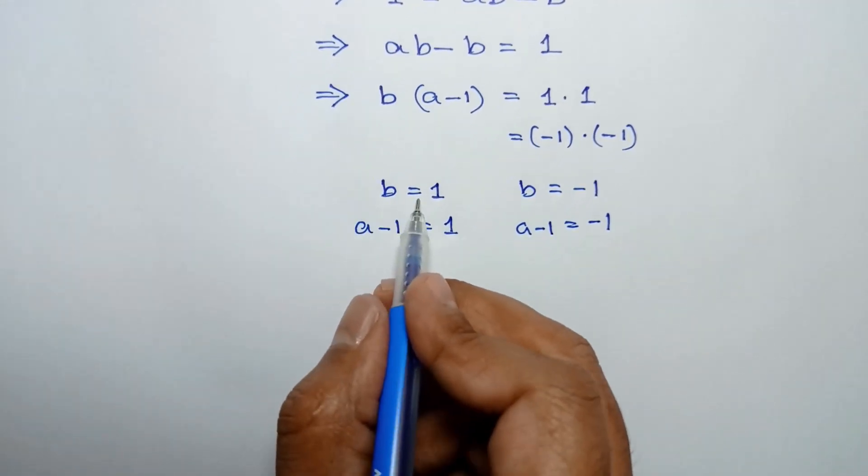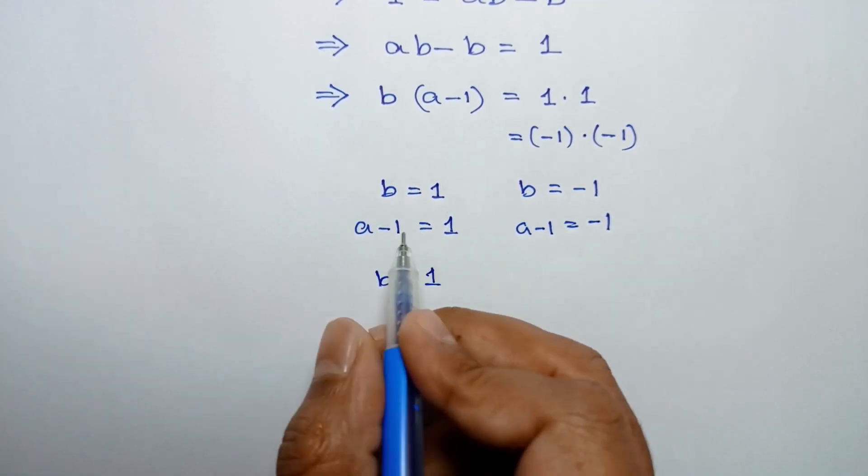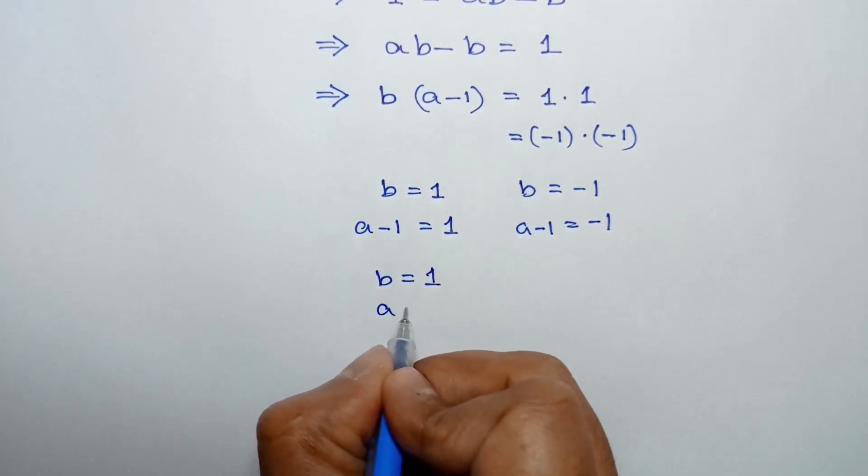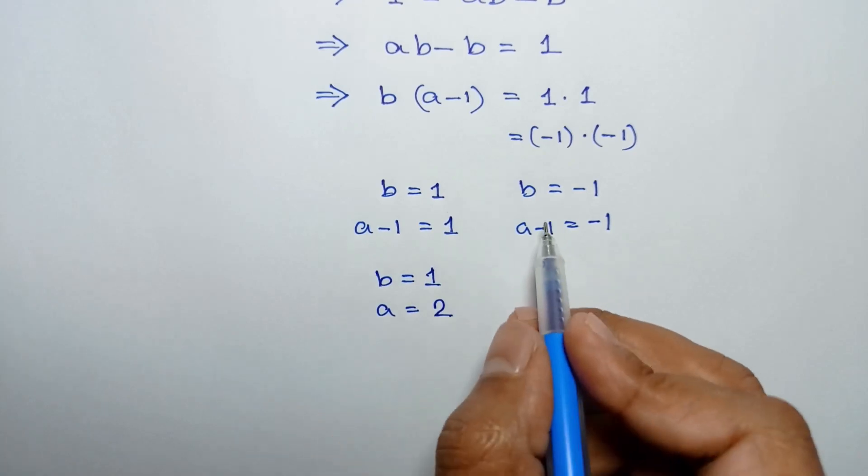Now, from here, the value of b is equal to 1, and taking this negative 1 to the right side, we can write a = 1 + 1 = 2. And from here, b = -1.